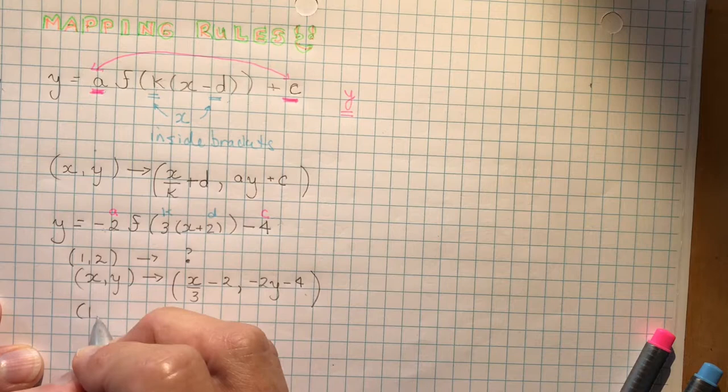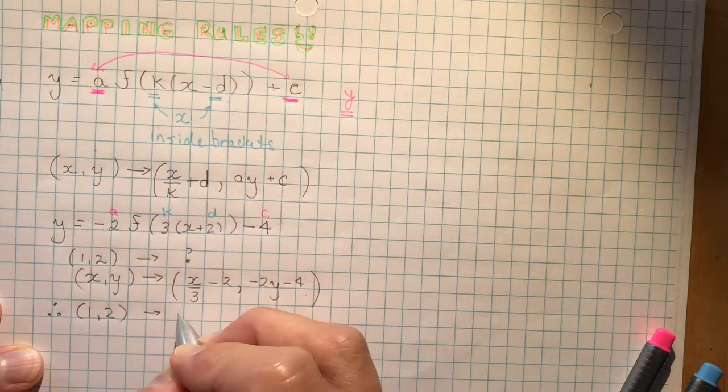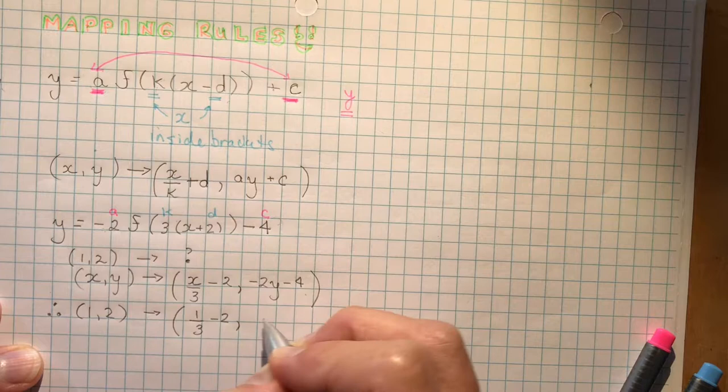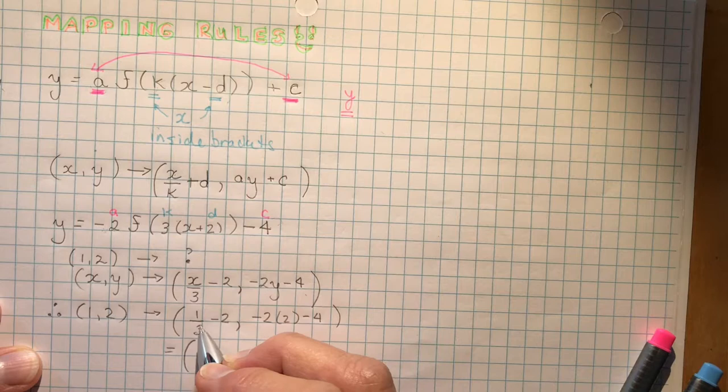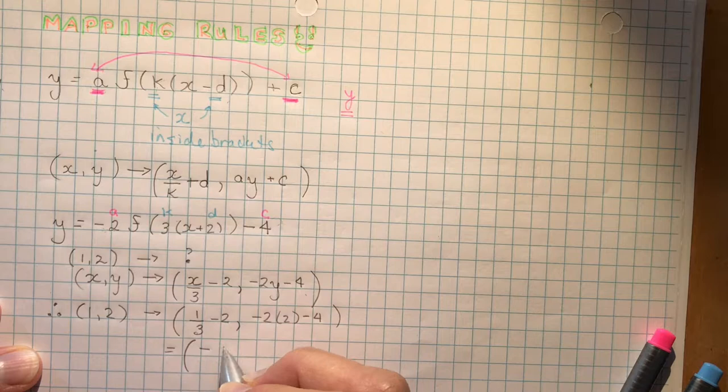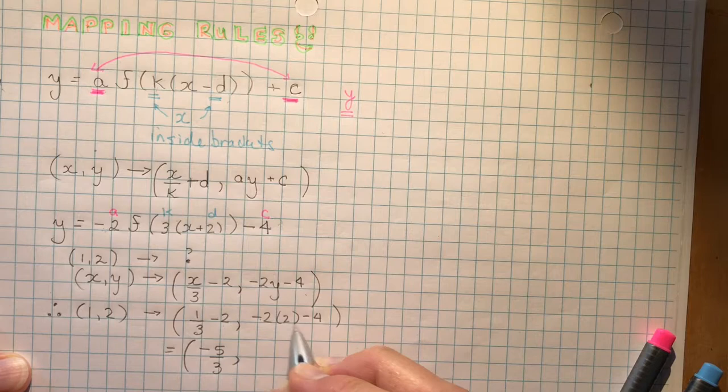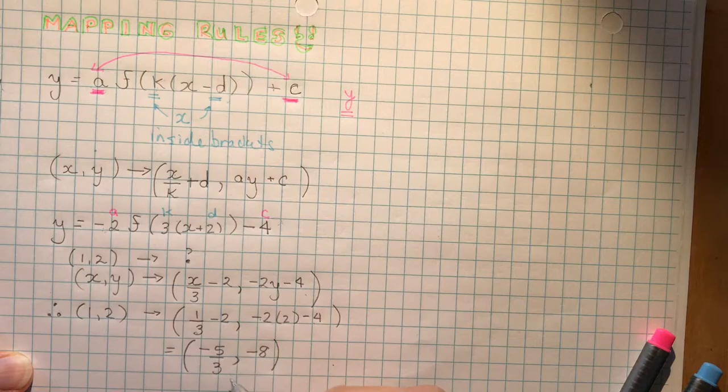So the point 1, 2. So that means that 1, 2. I'm going to say therefore. Therefore, 1, 2 would go to. And I would do 1 divided by 3 minus 2. And minus 2 times 2 minus 4. And that would give me a third minus 2. So that's 1 third minus 6 thirds. 1 minus 6 would be minus 5 thirds. And the Y minus 2 times 2 is minus 4. Minus 4 more is minus 8. So there you go. 1, 2 went to this.